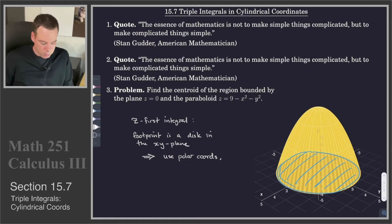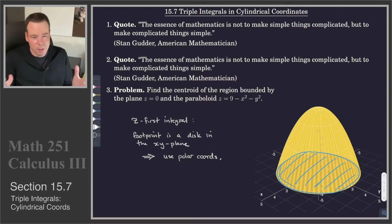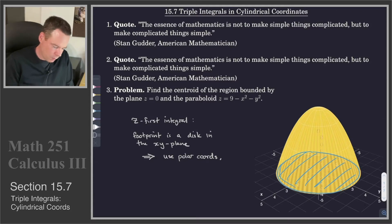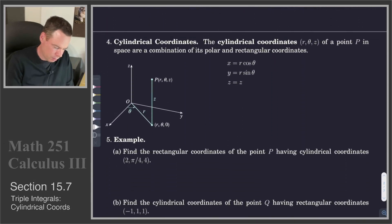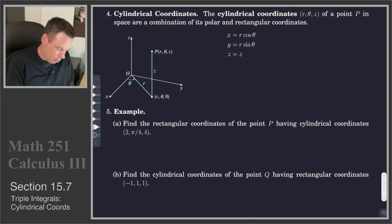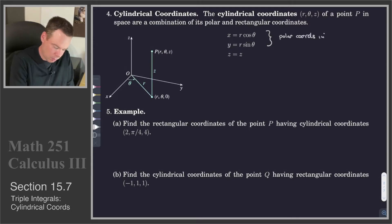Rather than thinking about it as doing a z-first integral and reducing it down to a double integral and then using polar for the double integral, we can think about it right from the very start — maybe we'll use a coordinate system which incorporates polar coordinates for the description of the point in the plane, the projection of the point down to the plane, but then we also have that third component which is the z-component. That's what we call the cylindrical coordinates of a point in three-dimensional space. The cylindrical coordinates are given by three coordinates: r, theta, and z. The r and theta values are precisely its polar coordinates in the xy-plane.